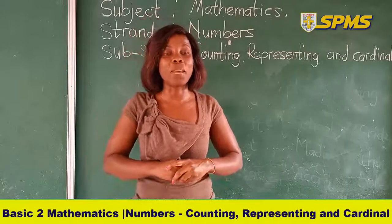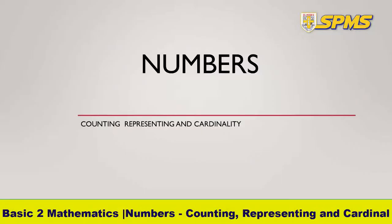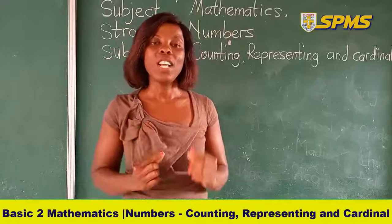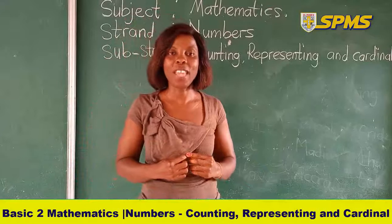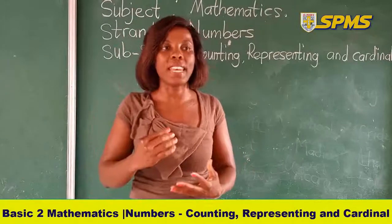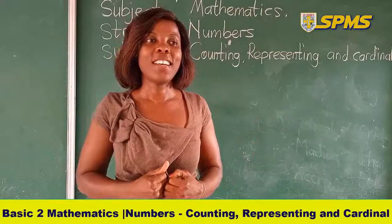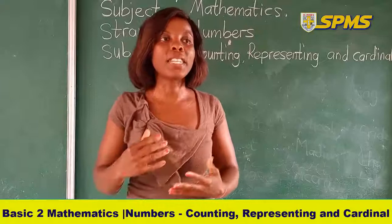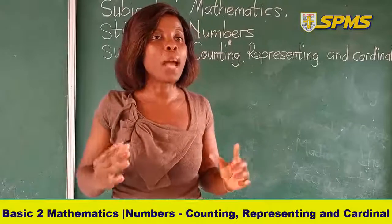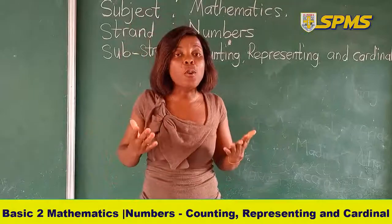For our first lesson in Basic 2, we are going to talk about numbers. Under numbers, we are going to count, represent, and also show cardinality in numbers. So by the end of the lesson, you should be able to identify numbers from 1 to 20 using loose strokes and bundles of 10. You should also be able to count in bundles of 10 up to at least 100, represent bundles in the appropriate place value, and write the number name.